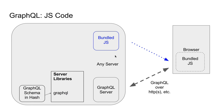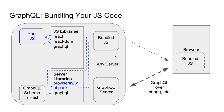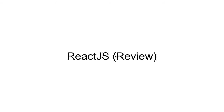On the client side, the bundle JS is capable of speaking GraphQL, but it did not exist on the browser — it actually came from the server as well. This bundle JS requires a set of JS libraries, for instance React, React DOM, and GraphQL, which your customized JavaScript includes, and then it gets packed together either using Browserify or Webpack into a JS bundle, which is downloaded by the browser.